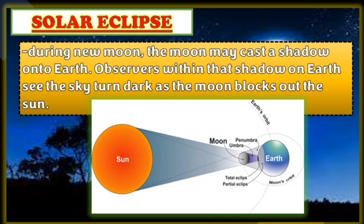Next is the solar eclipse. During a new moon, the Moon may cast a shadow onto Earth. Observers within that shadow on Earth see the sky turn dark as the Moon blocks out the Sun — meaning the Moon is positioned between the Sun and the Earth, as shown in the diagram.